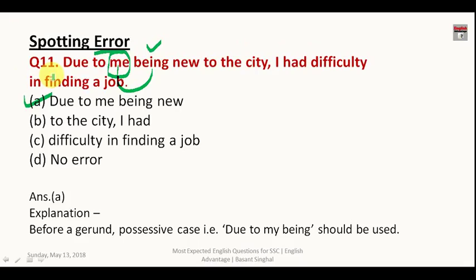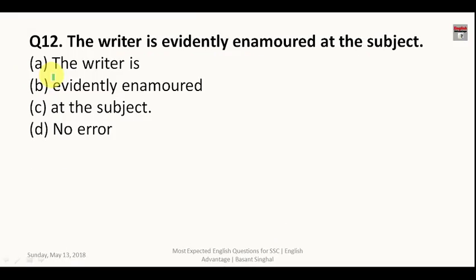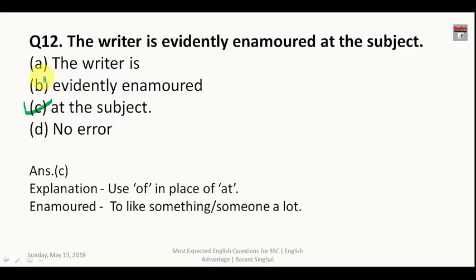Question twelve: 'The writer is evidently enamored at the subject.' When you are enamored of something, you are in love with that thing. 'Enamored' is followed by 'of', not 'at'. The correct answer is C: 'enamored of the subject.' Enamored means to like something or someone a lot — a very good word.